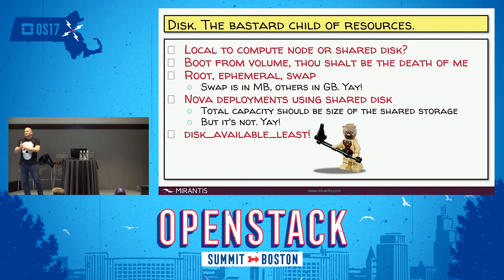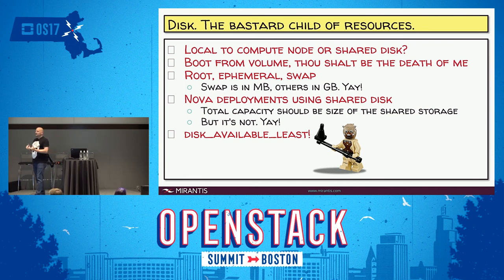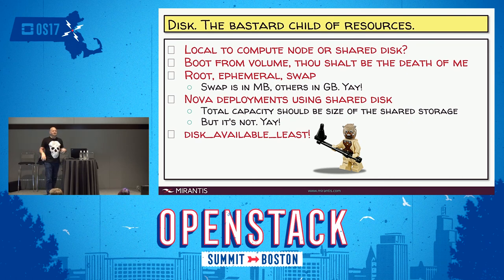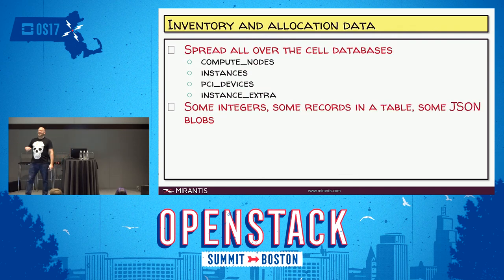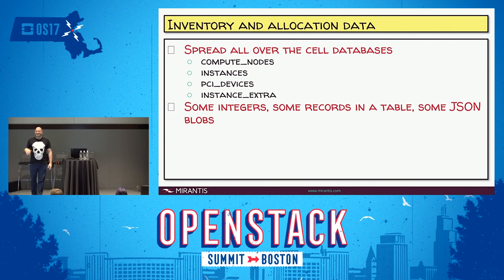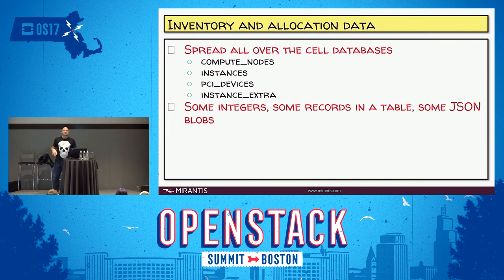Disk — everyone's favorite friend. The inconsistencies around disk reporting are many and kind of infuriating. Depending on the type of disk and the hypervisor you're using, whether you're using shared storage or local disk, all these things affect the reporting, tracking, and varying degrees of accuracy of disk resource management. There's also disk_available_least — does anyone actually know what that does? It's totally different depending on what image backend you use. It's just so weird.